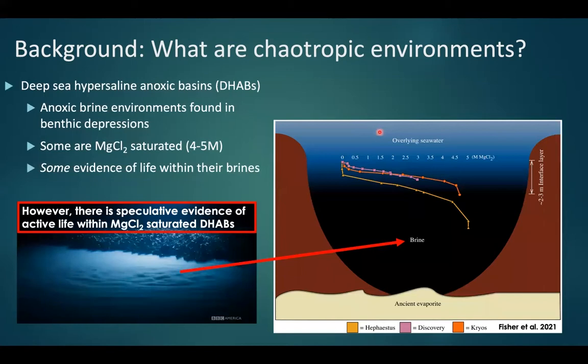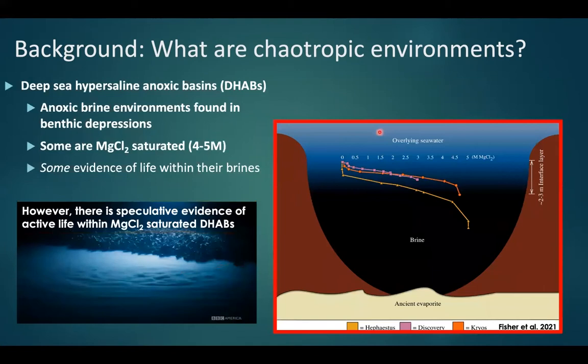However, there's some speculative evidence of active life within magnesium chloride-saturated DHABs — deep sea hypersaline anoxic basins. These are anoxic brine environments found in benthic depressions, generally in enclosed seas such as the Eastern Mediterranean and the Red Sea. A few dozen DHABs have been discovered; most are sodium chloride saturated with evidence of active microbial communities, while only three have been shown to be magnesium chloride dominated.